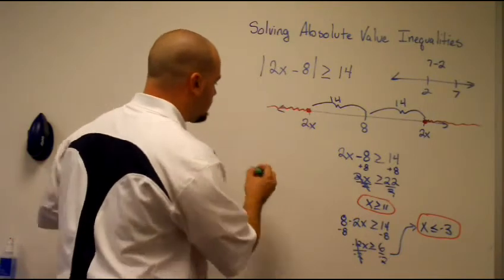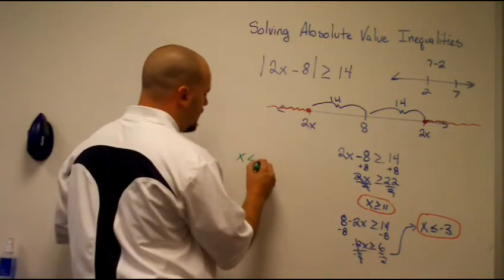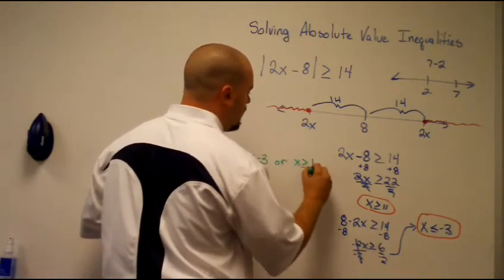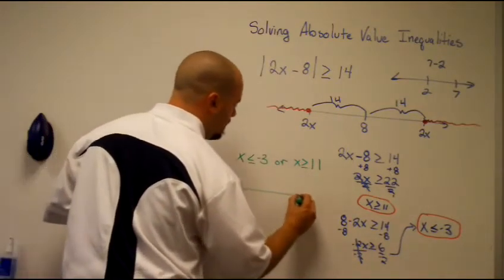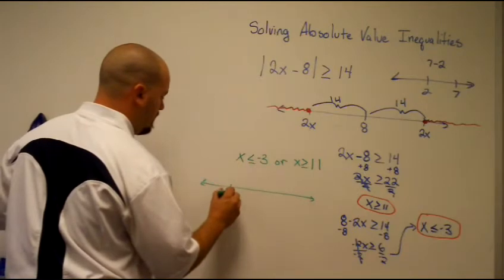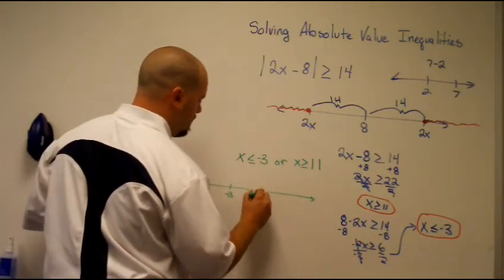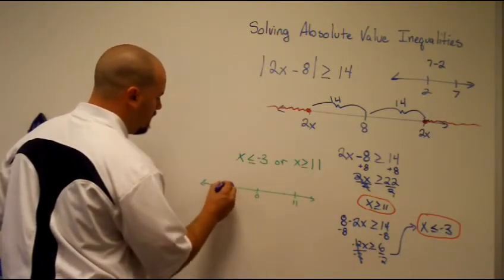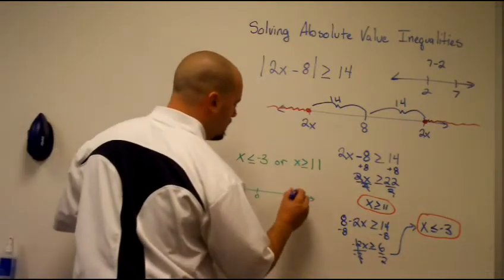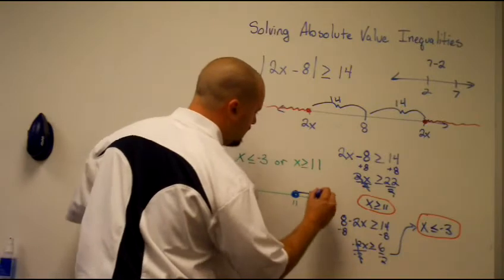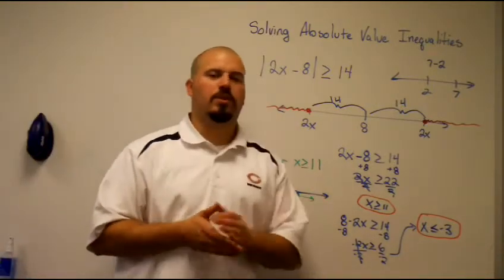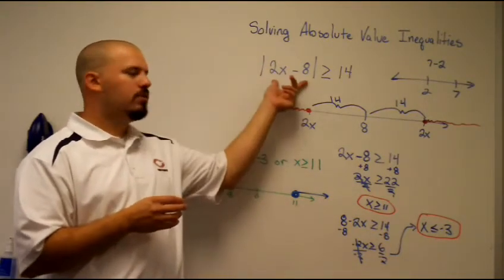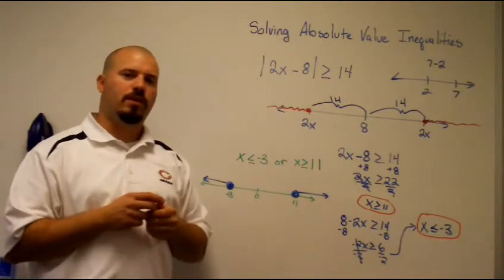Our places where 2x could be are either over here or over here, so it's an 'or' inequality — two different spots that don't overlap. So our answer is x is less than or equal to negative 3, or x is greater than or equal to 11. To graph that on a number line: for less than or equal to negative 3, fill it in and shade to the left; for greater than or equal to 11, fill it in and shade to the right. That's one example of solving an absolute value inequality using the idea of distance between two values.